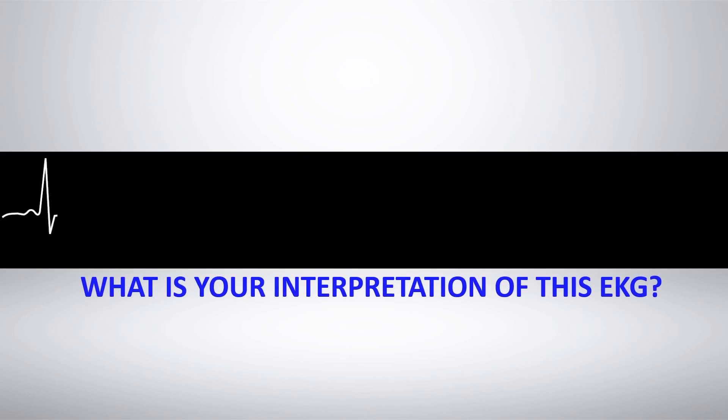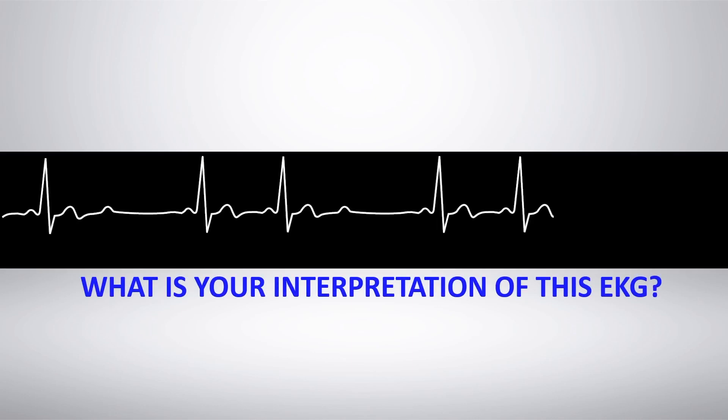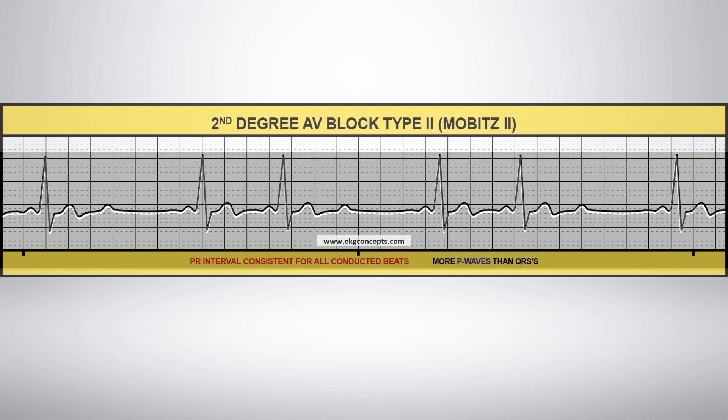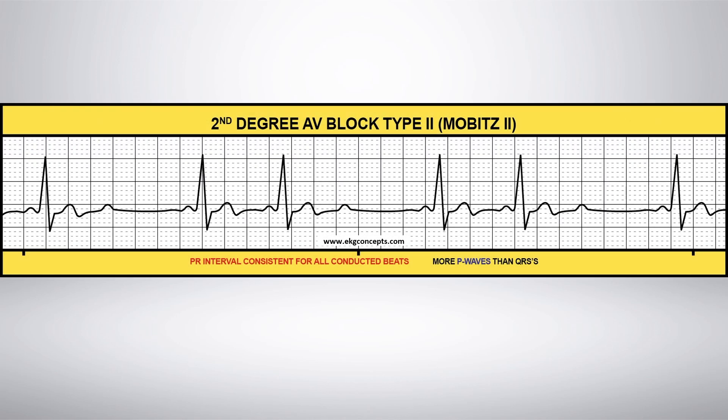What is your interpretation of this EKG rhythm strip? Second-degree AV block type 2, or Mobitz 2.